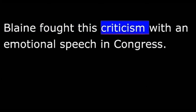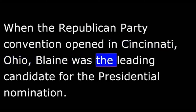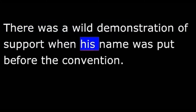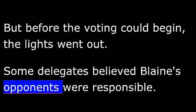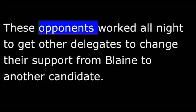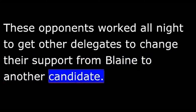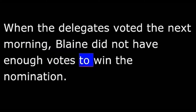Blaine fought this criticism with an emotional speech in Congress. When the Republican Party convention opened in Cincinnati, Ohio, Blaine was the leading candidate for the presidential nomination. He expected to win the first day. There was a wild demonstration of support when his name was put before the convention. But before the voting could begin, the lights went out. Some delegates believed Blaine's opponents were responsible. These opponents worked all night to get other delegates to change their support from Blaine to another candidate. When the delegates voted the next morning, Blaine did not have enough votes to win the nomination.